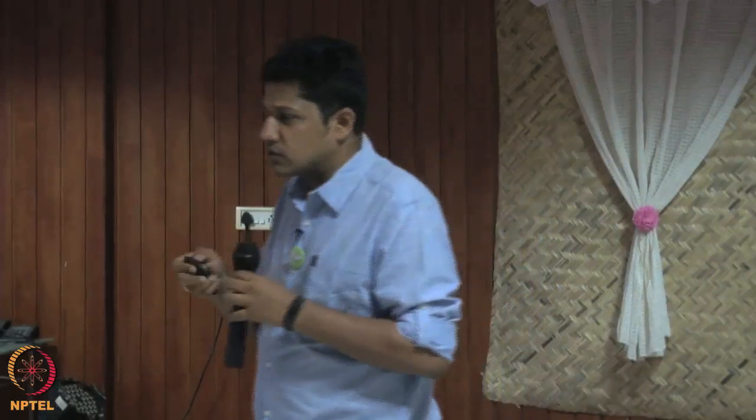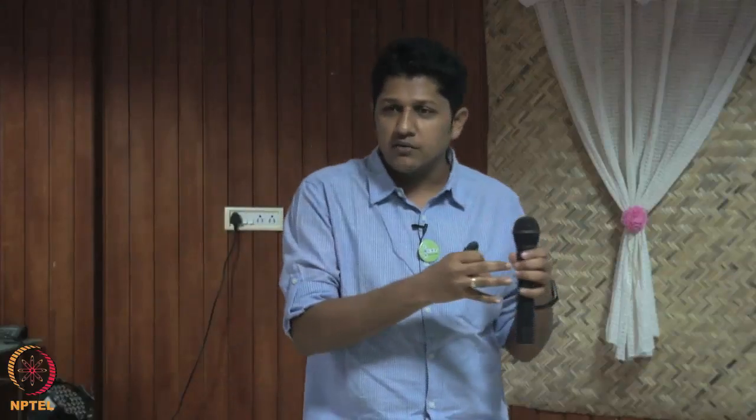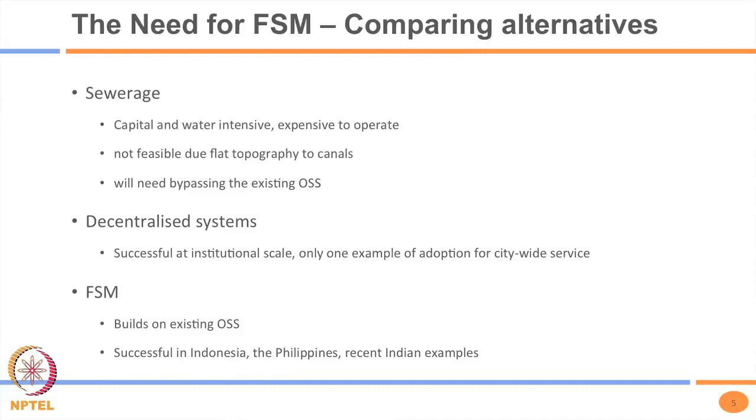Households may not be willing to dismantle existing systems and connect to sewage, partly because their taxation increases once connected — I've seen examples of this in Gujarat. Decentralized systems exist but in India, except for Bangalore, no city has taken them up at city scale. FSM has two advantages: it builds on existing on-site systems, so whatever is there can be used as is, and there are now successful examples both outside India and increasingly within India.